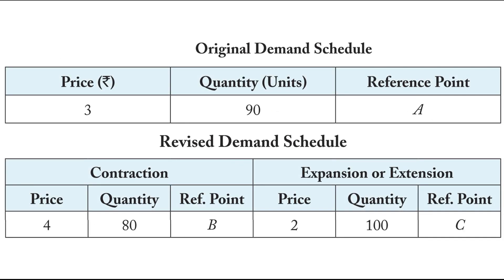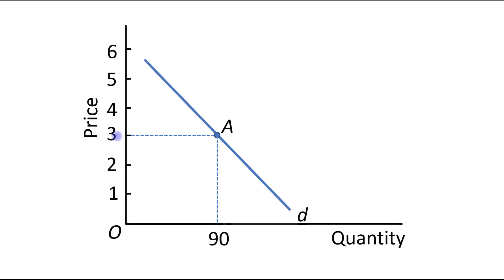Let's understand expansion and contraction with the help of a schedule. First, let's focus on the original demand schedule. Originally, at a price of Rs. 3, quantity demanded is 90 units and the reference point is A. We plot this on a graph with price on the vertical axis and quantity on the horizontal axis. At a price of Rs. 3, quantity demanded is 90 units, and this is reference point A.